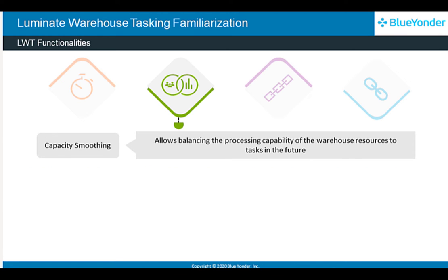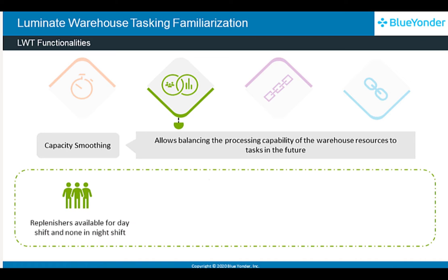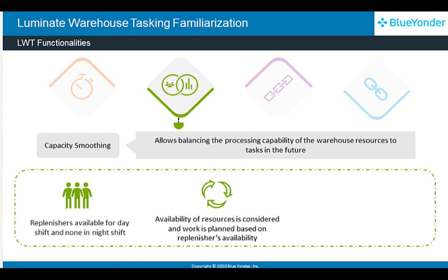The capacity smoothing ability allows for balancing the processing capability of the warehouse resources to tasks in the future. For example, if a warehouse has replenishers in the day shift but none in the night shift, LWT considers the availability of resources and plans work in a way that any replenishment needed at night is taken care of in the morning shift. This way, LWT considers resource configuration and adjusts work priority without manual intervention.